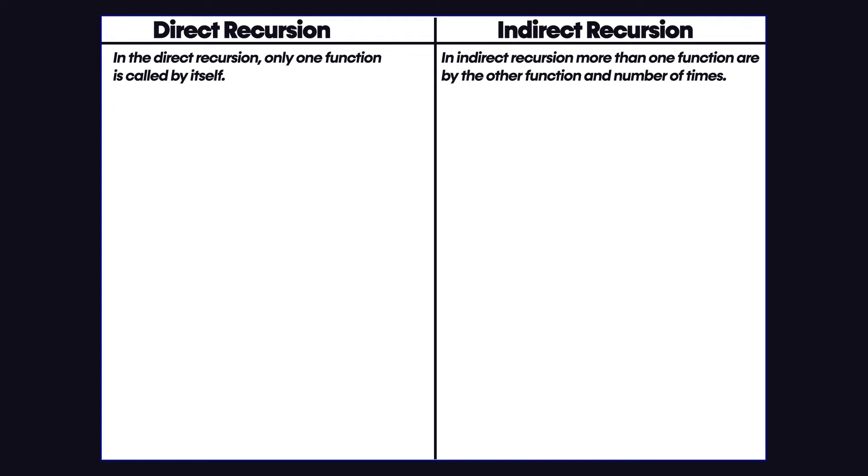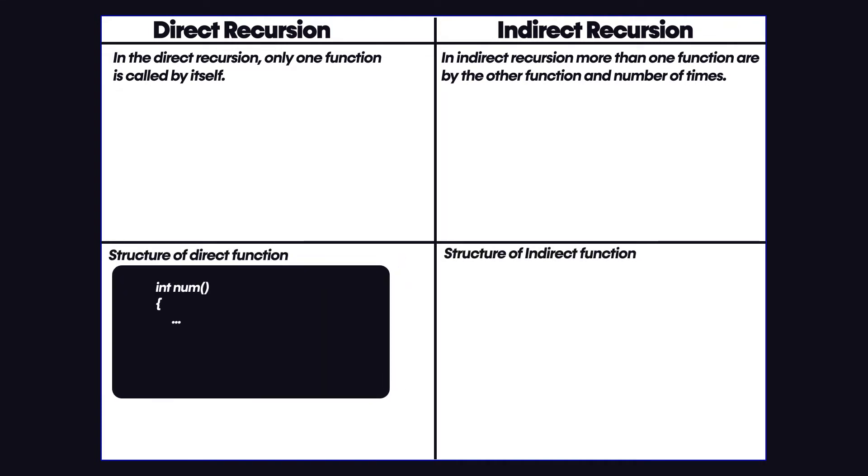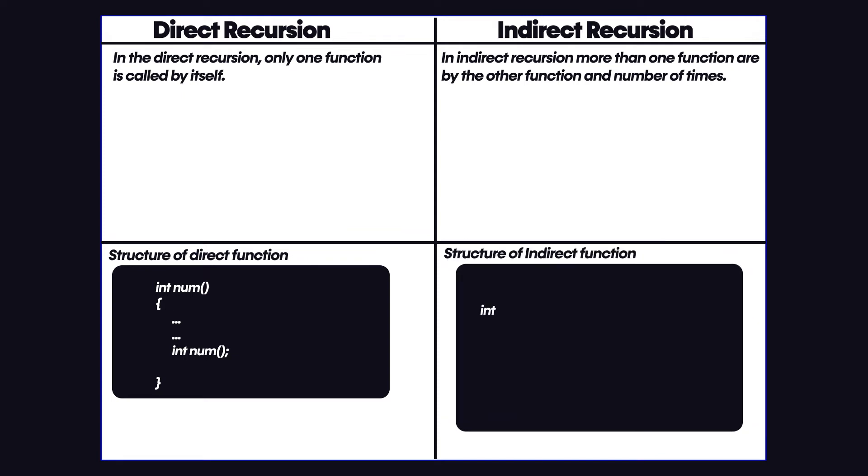So let's just have this structure of direct and indirect recursion on our screen. You can see that in the structure for direct function we have a function named as num, and within this function we're returning a statement which is the integer num.